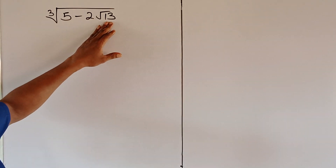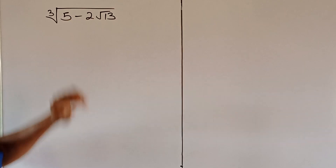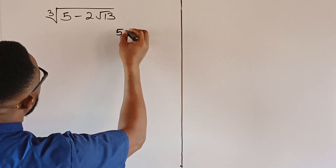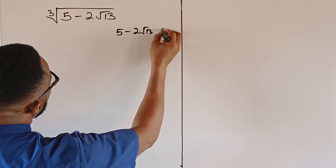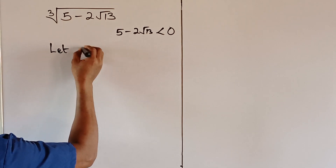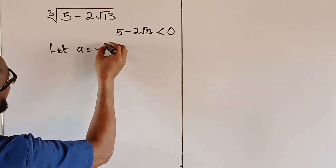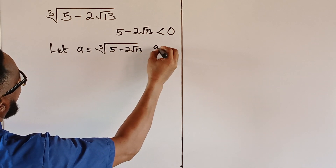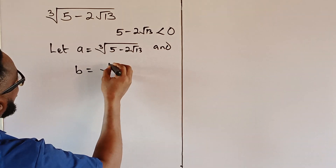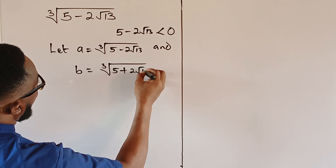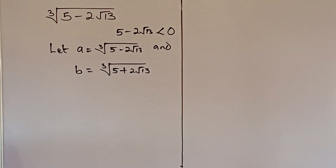The square root of 13 multiplied by 2 is greater than 5, so the domain of this solution is that 5 minus 2 radical 13 should be less than 0. We let A equal to the cube root of 5 minus 2 radical 13, and B equal to the cube root of the conjugate, 5 plus 2 radical 13.